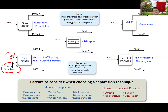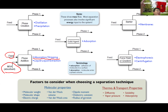This absorbent is typically a different phase from your feed. For example, if your feed is liquid, you can add a solid absorbent — that's the absorption and stripping process. Stripping is basically the reverse process of absorption where you regenerate your absorbent. If your feed is liquid, you can add another liquid that's immiscible with your feed — that's liquid-liquid extraction. The third type is adsorption, where you use a solid agent called an adsorbent.